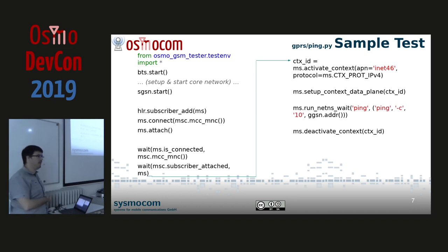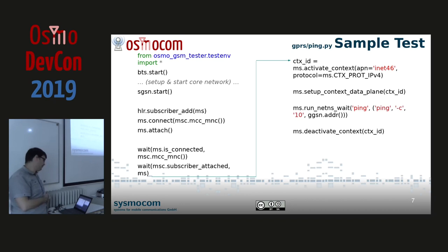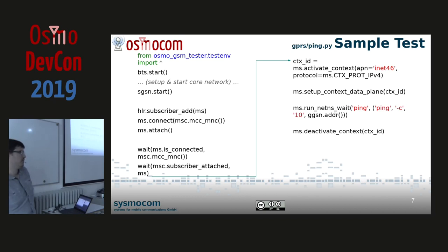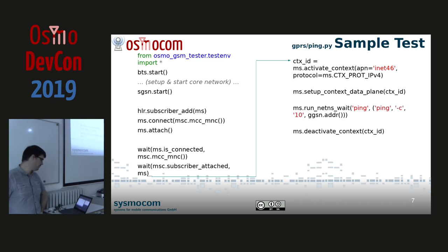Let's look at an example of how a GPRS test in Osmo GSM tester looks. Like all tests, the first block imports modules, starts the whole network, gets objects, and starts BTS, SGSN, whatever. We have the MS object which is a modem using Ofono underneath, and we tell the HLR to add subscriber data from this MS. Then we tell the MS to connect to the MSC — that's an asynchronous function, so it just starts registering. We also tell the MS it is allowed to attach to GPRS on this network.